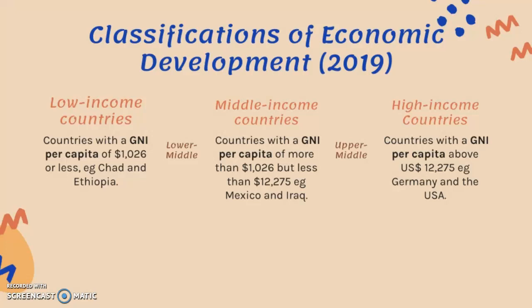High-income countries have a GNI per capita above $12,275, such as Germany and the USA. Between these main categories are also lower-middle and upper-middle income sub-categories that you should be aware of.